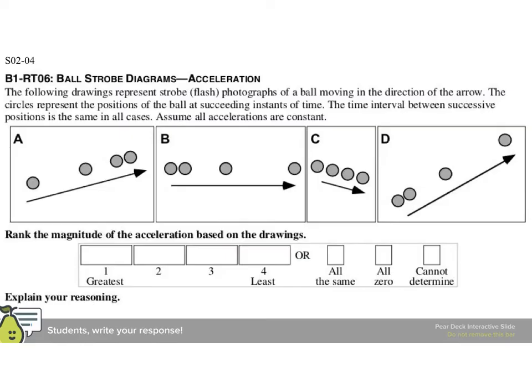The following drawings represent strobe or flash photographs of a ball moving in the direction of the arrow. The circles represent the positions of the ball at succeeding instances of time. The time interval between successive positions is the same for all cases, and assume that all accelerations are constant. Rank the magnitude of the acceleration based on the drawings. So we look here and we say, well, one of them is really easy, so I'm going to do that one first.